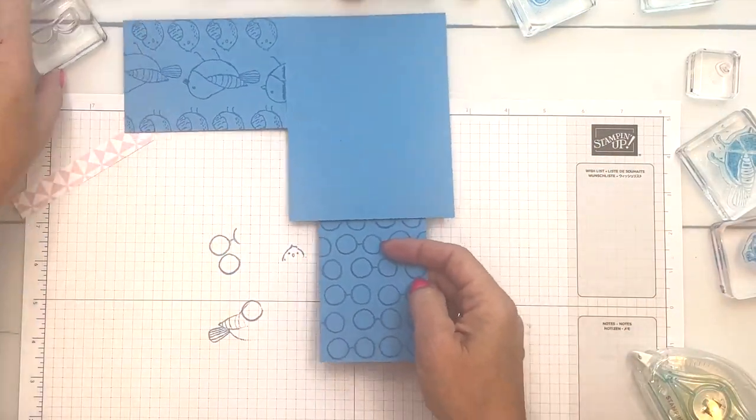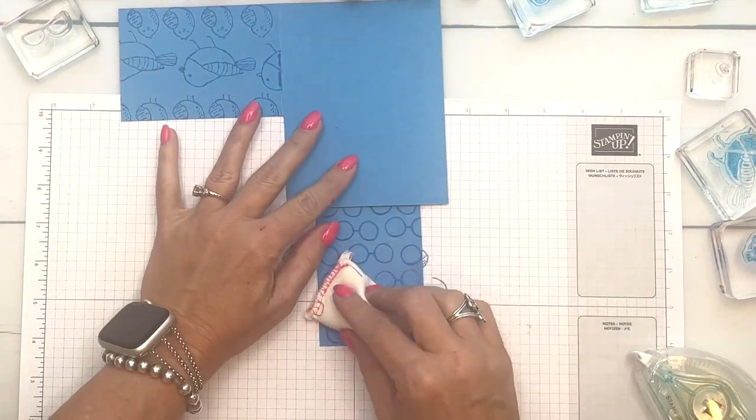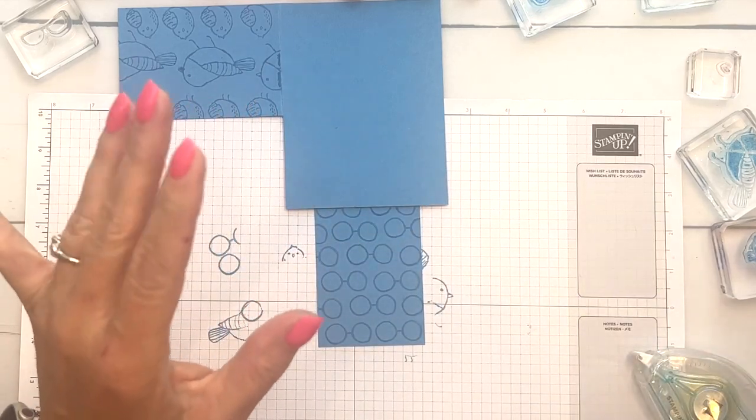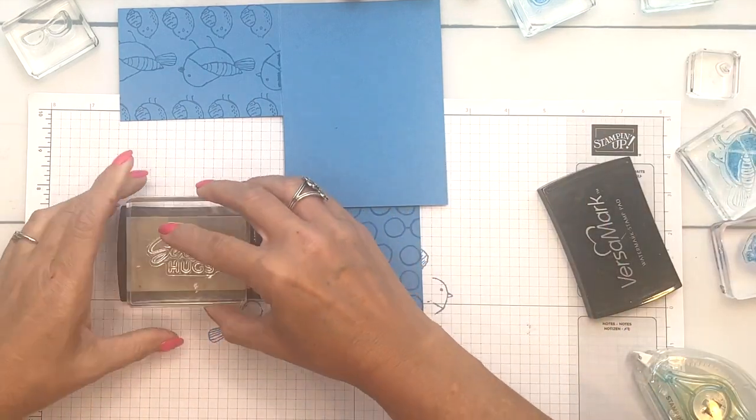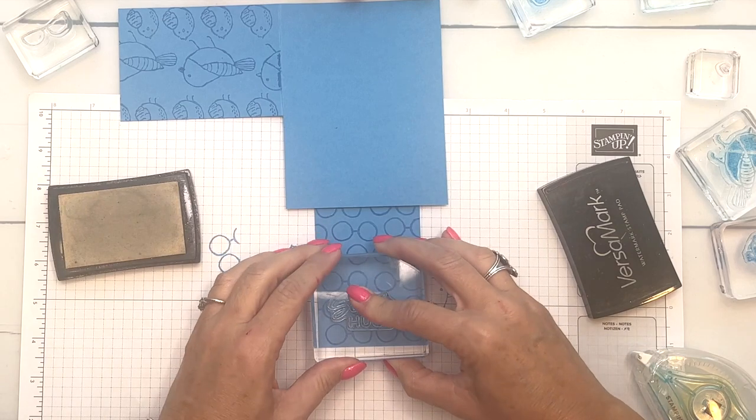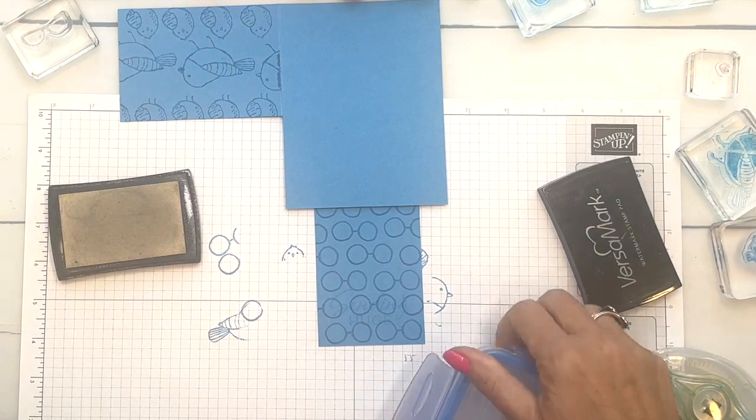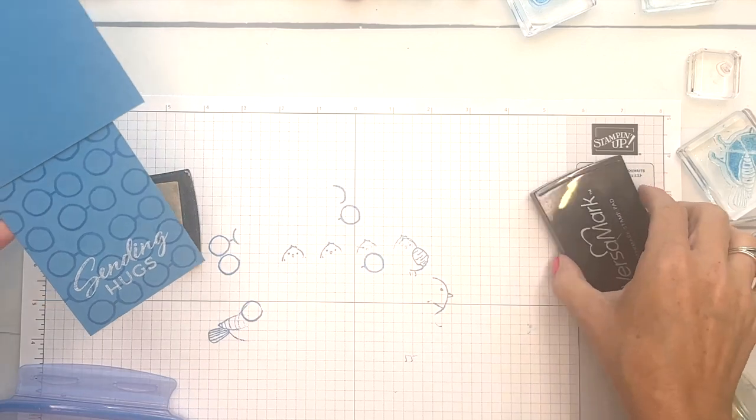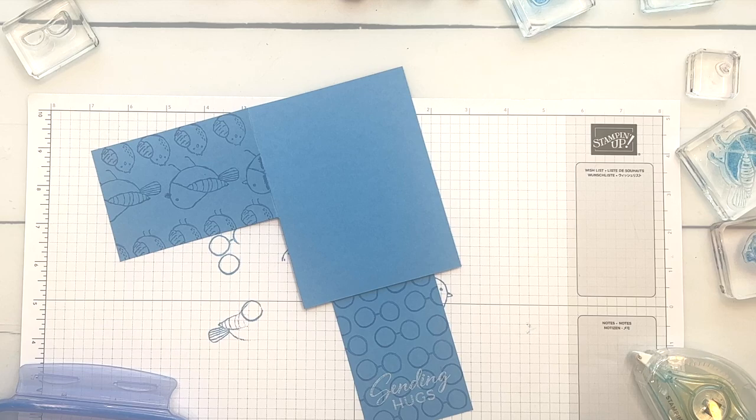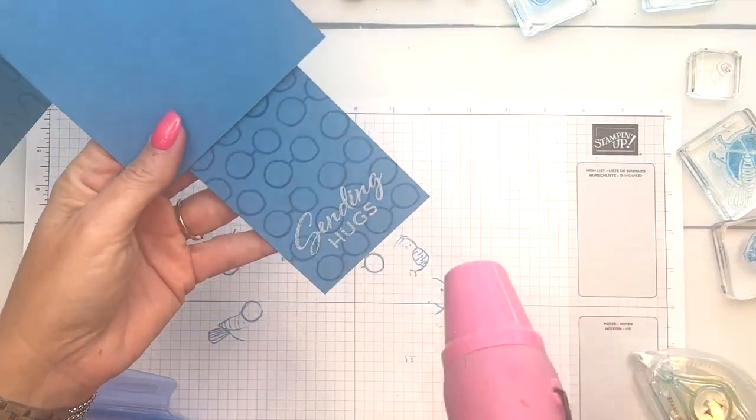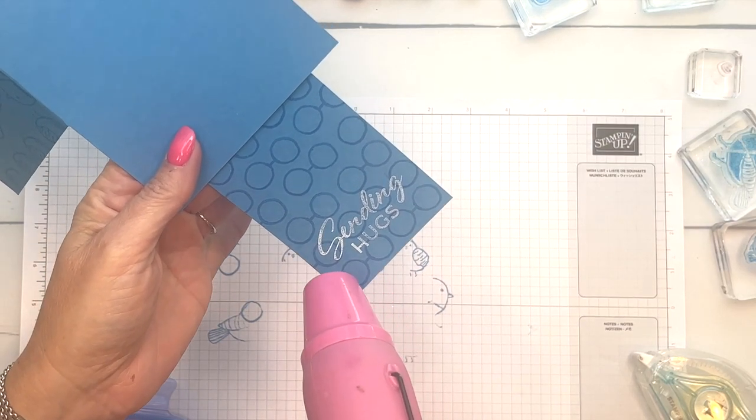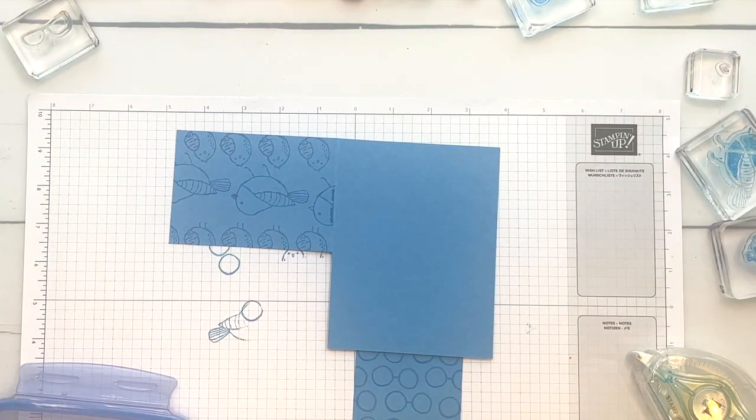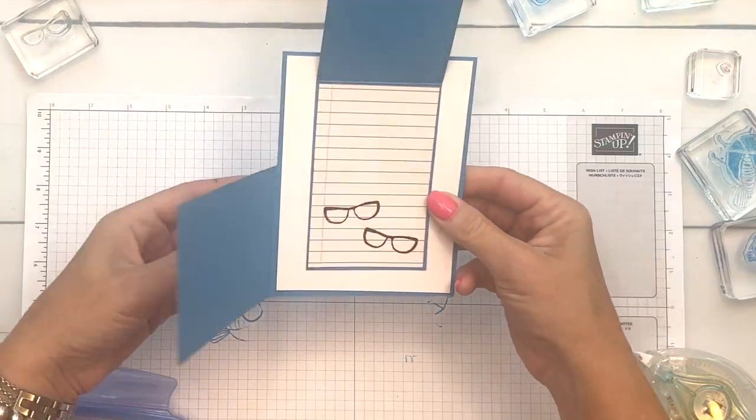On the front we're going to do our embossing of our sentiment. We already have ink there, so we need to use our embossing buddy because we want our granules of embossing powder to only stick to this ink. Sending Hugs, I'm going to do it right here towards the bottom. That embossing buddy worked perfectly. Let me grab my heat tool and we will heat it. You'll know it's done when it turns bright white and shiny.